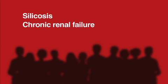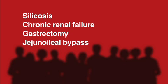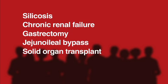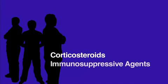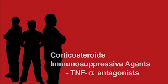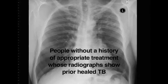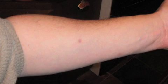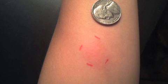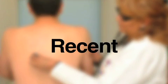Other conditions that put people at higher risk of progressing to TB disease include silicosis, chronic renal failure, gastrectomy, jejunoileal bypass, solid organ transplant, head or neck cancer, or hemodialysis. Prolonged use of corticosteroids or other immunosuppressive agents, such as TNF-alpha antagonists, also increases risk. People without a history of appropriate treatment whose radiographs show prior healed TB, and people whose test for TB infection has changed from negative to positive within the last two years — also referred to as recent converters — are also at high risk.